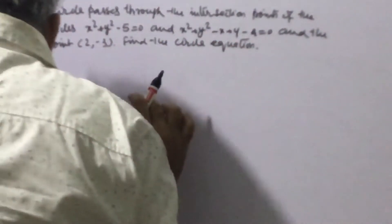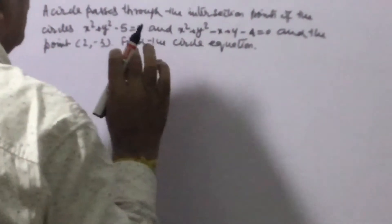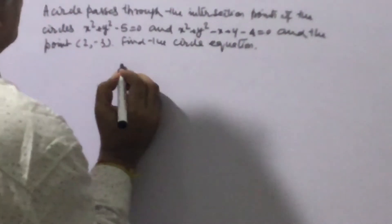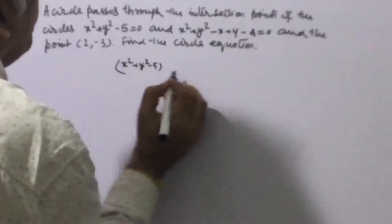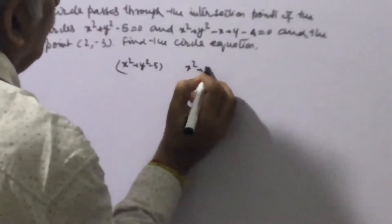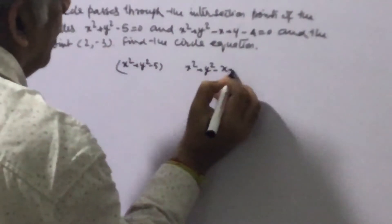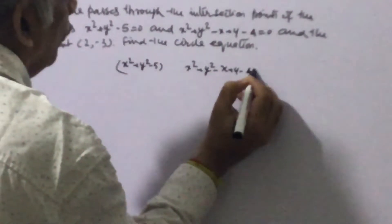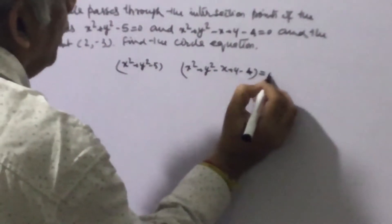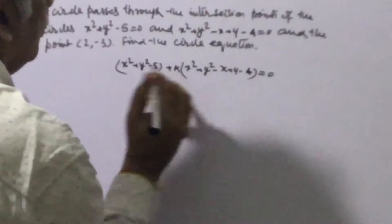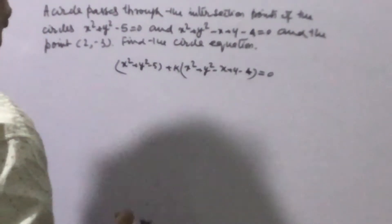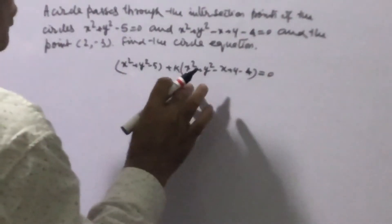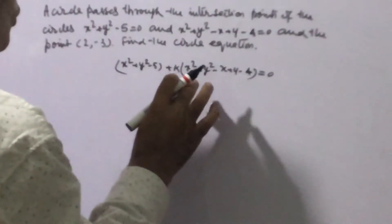The equation of any curve passing through the intersection points of x² + y² - 5 = 0 and x² + y² - x + y - 4 = 0 will be given by the general equation: (x² + y² - 5) + k(x² + y² - x + y - 4) = 0. This is the general equation which passes through the intersection points of the given circles.